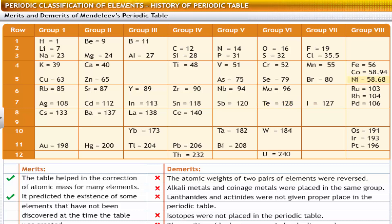Nickel, with atomic weight 58.68, came after cobalt, whose atomic weight is 58.94.